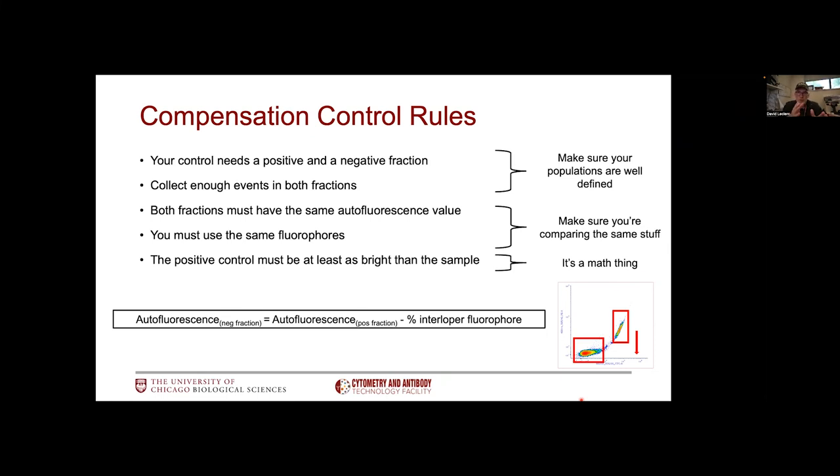The last rule says that the positive control must be as bright or brighter than what you'll find in your sample. This is simply a math thing. You want to have a control which is as bright as possible so you can positively figure out what's going to happen with a dimmer signal that you'll find in your sample. If the reverse is true and your control is dimmer than what you'll find in your sample, you end up extrapolating. You might get lucky and be correct, but that's unlikely, and you're going to be stuck with a compensation matrix that simply will not work. When you extrapolate, you made extra of Paul and Nate.